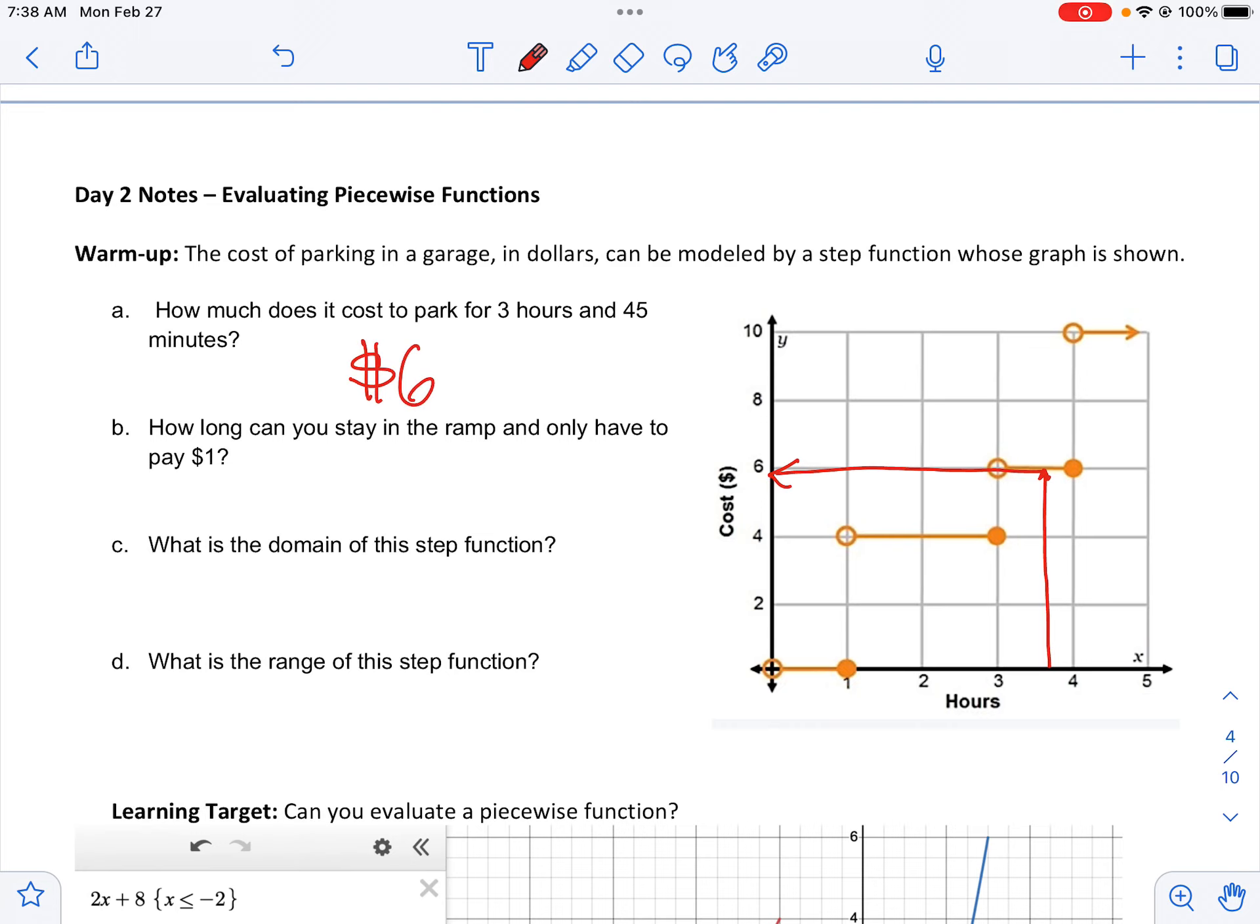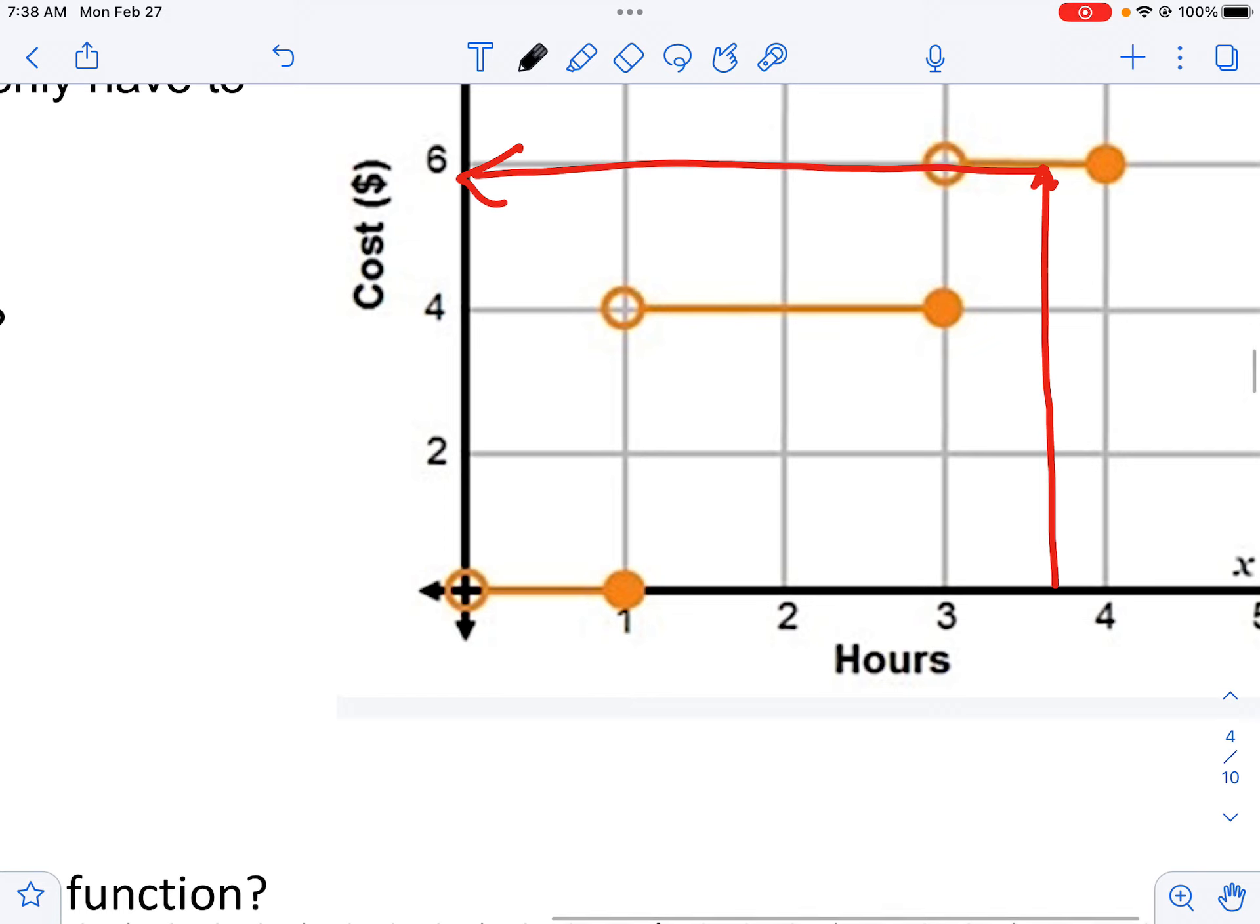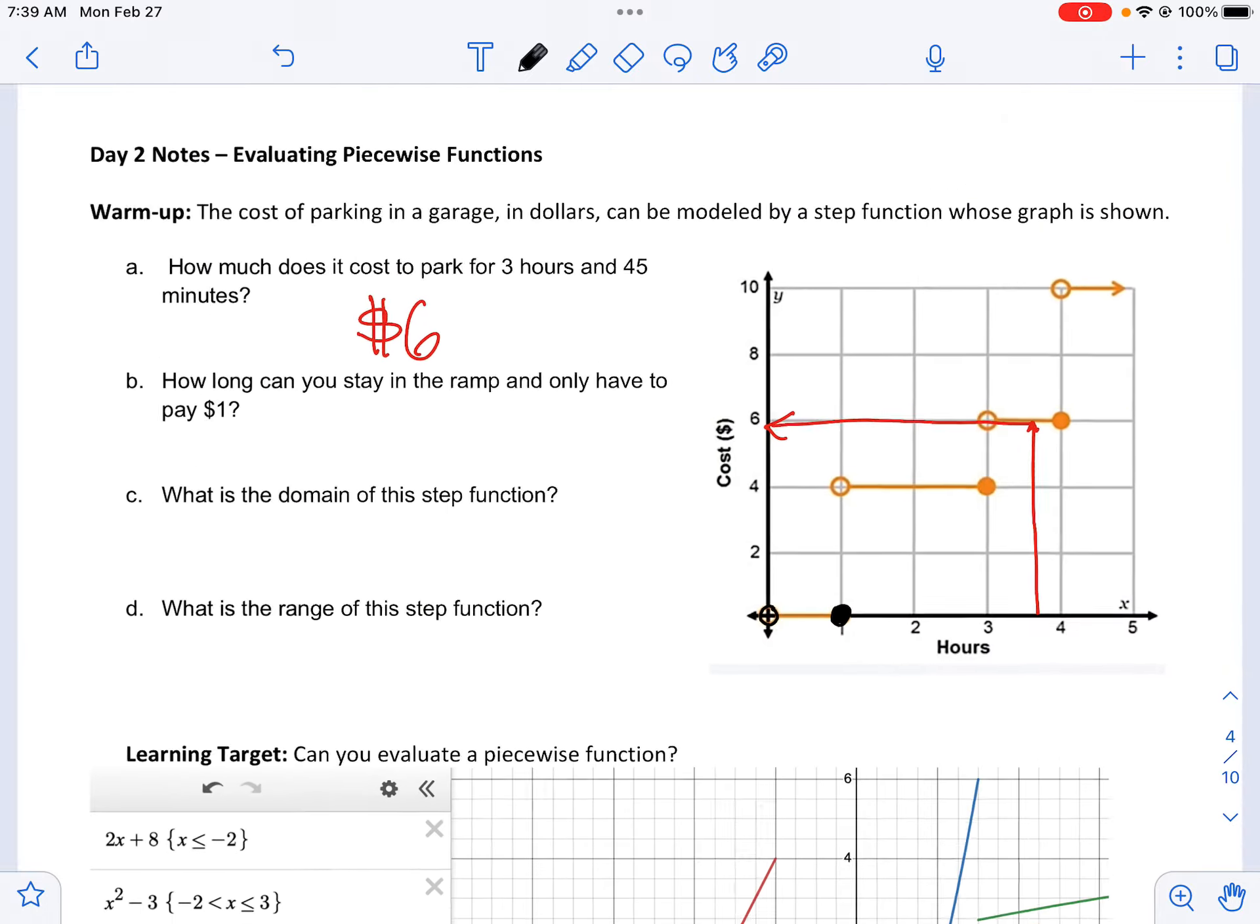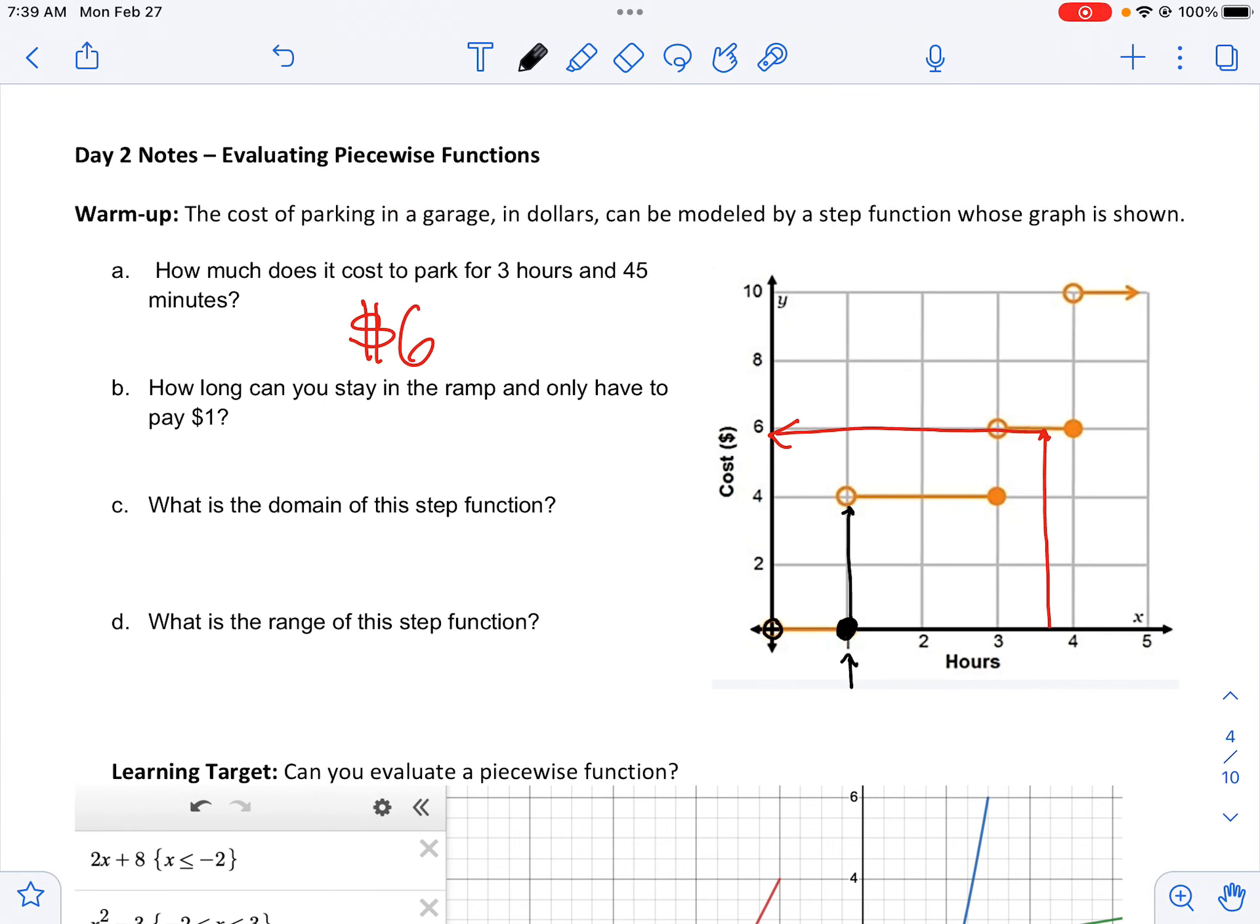Part b: How long can you stay in the ramp and only have to pay $1? When you take a look at this, the open circle means it starts there but doesn't include it, and the filled in circles means it does include it. So for $1, we can stay in the parking lot up to one hour. And then at one hour, right after that, it jumps to $4. So one hour.